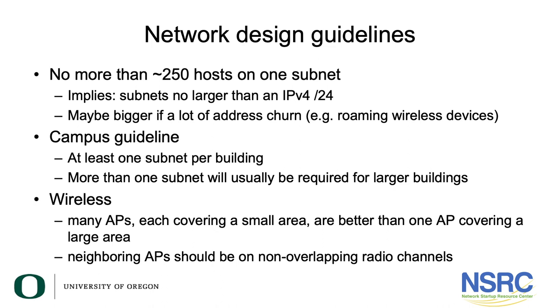For wireless, the same rules apply, but the collision domain consideration means you should prefer many access points each serving a smaller number of users rather than one large access point covering a wide area. Many users on the same access point means they share a collision domain, limiting throughput. You also need to ensure neighboring access points use non-overlapping radio channels — for 2.4 GHz, that means channels 1, 6, or 11. A good wireless management system helps, but a proper site survey is recommended to ensure channels remain non-overlapping.